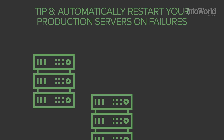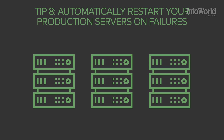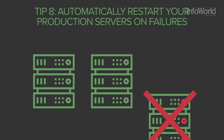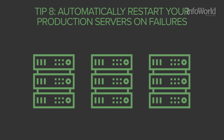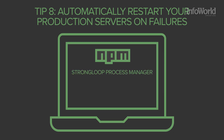Run your production servers like cattle, not like pets. If a server goes down, you should have a process manager in place to kill it and start a new instance. Common examples include the StrongLoop process manager, PM2, and the forever and forever-monitor NPM packages.